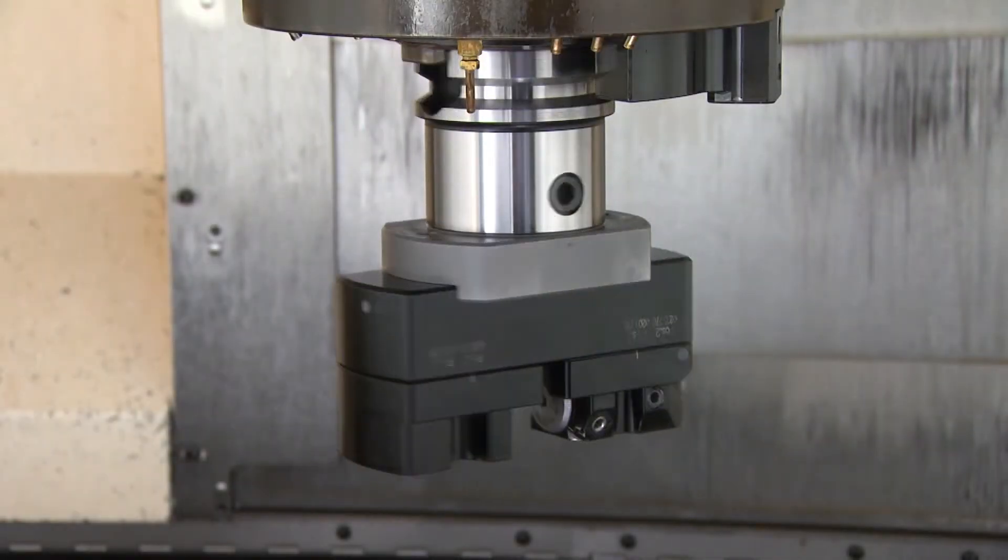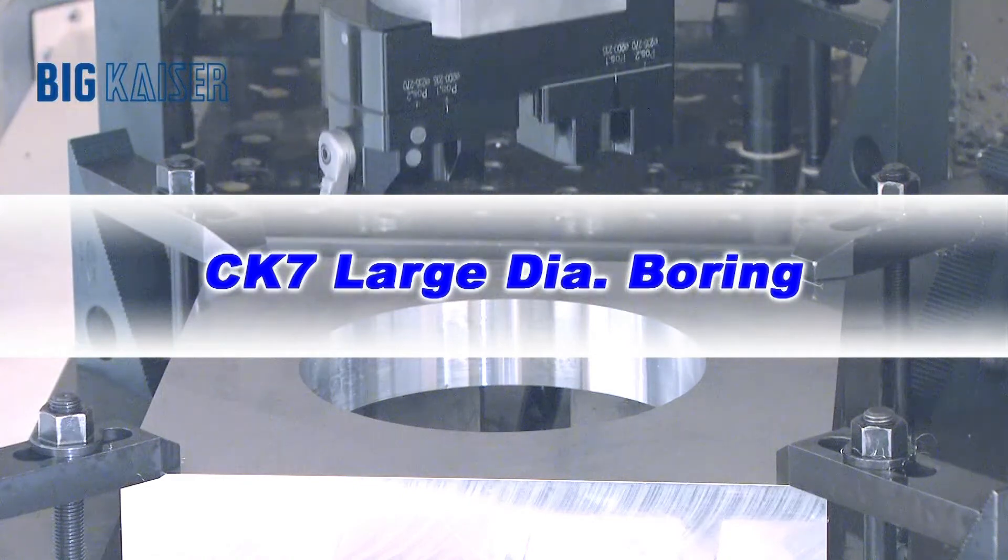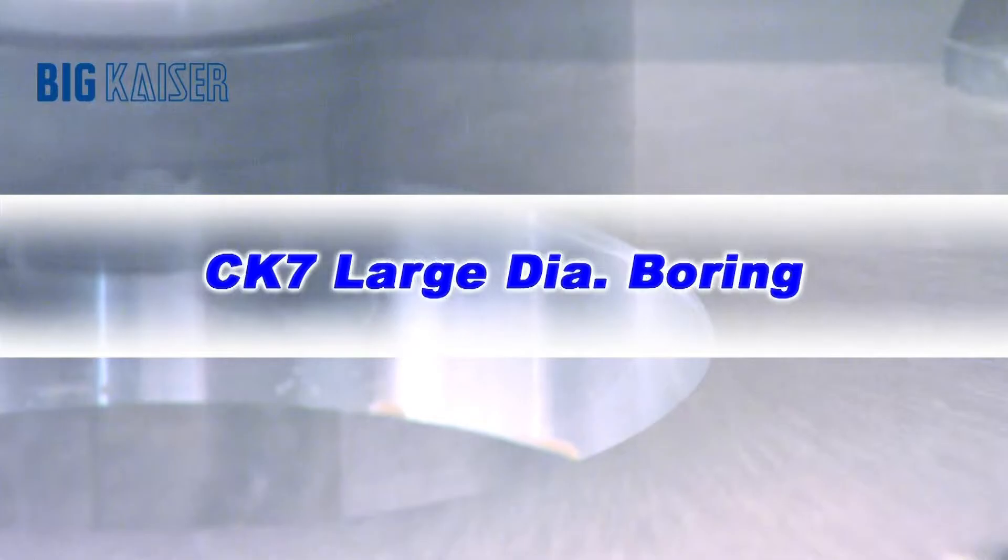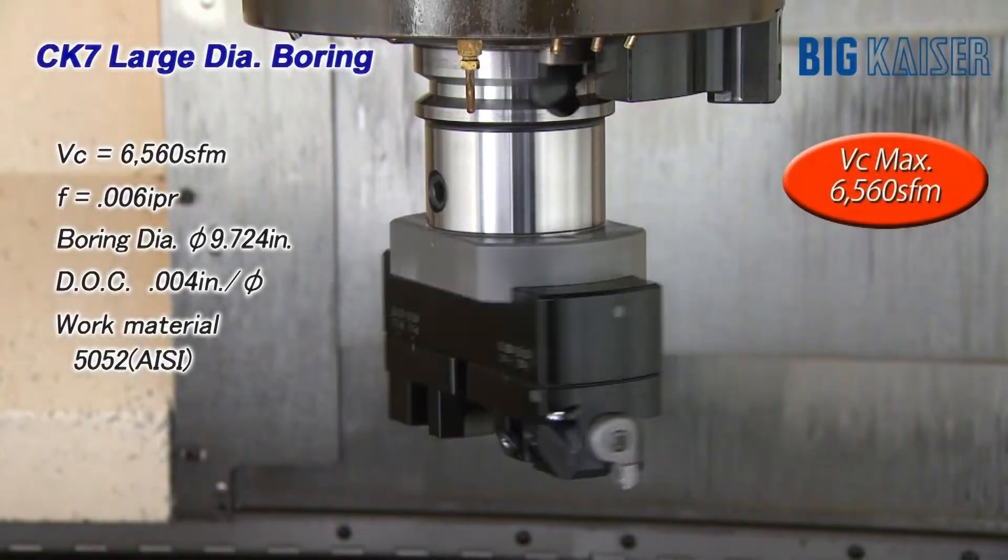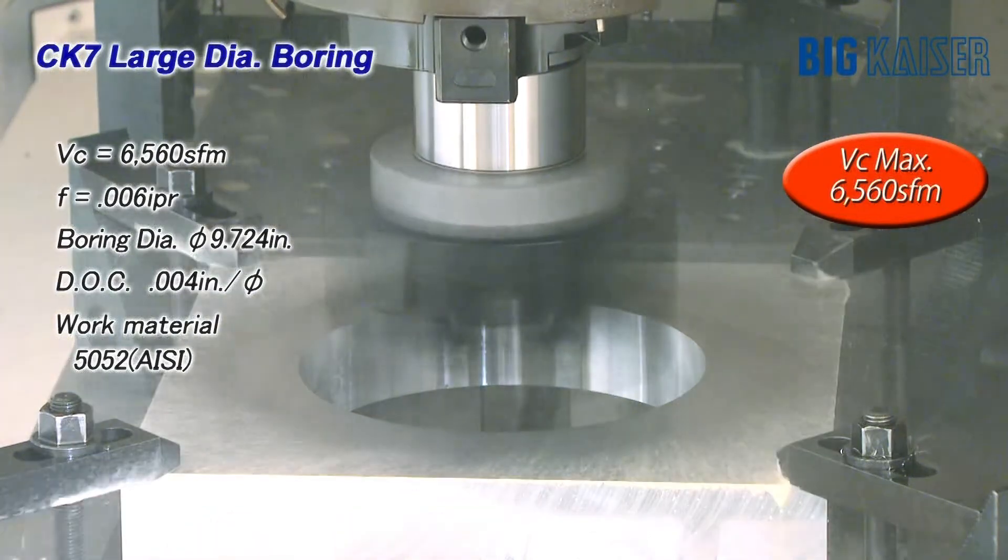By assembling the CK 7 component parts, a large range of diameters from 7.87 inches to 34.65 inches can be covered. A high-speed finishing tool is then assembled and a cutting speed of 6,562 SFM is achieved.